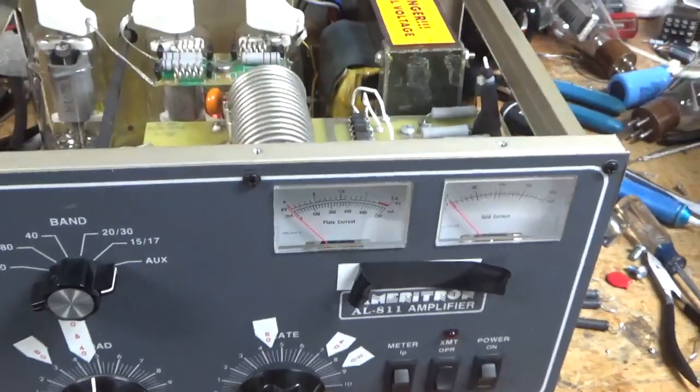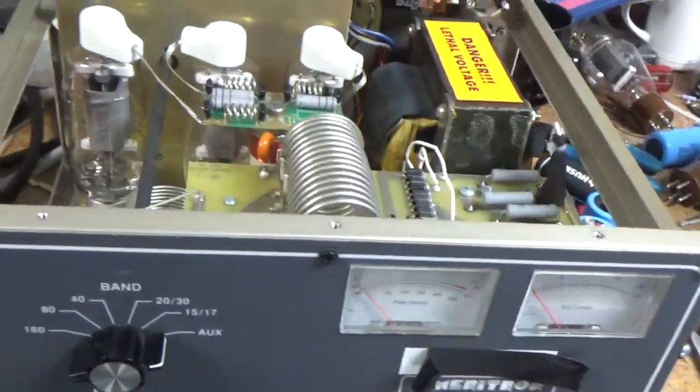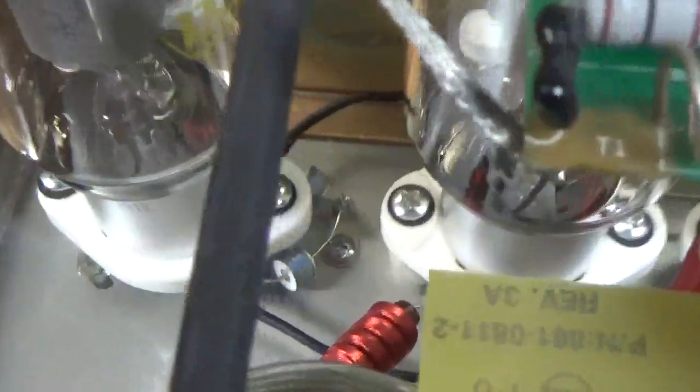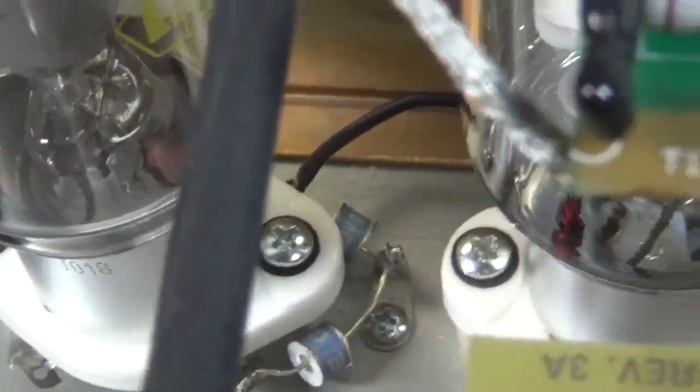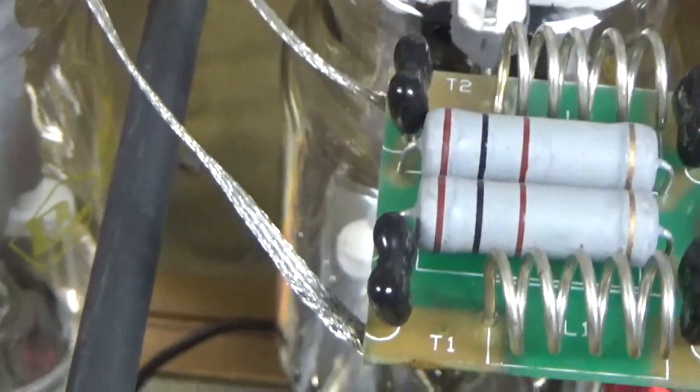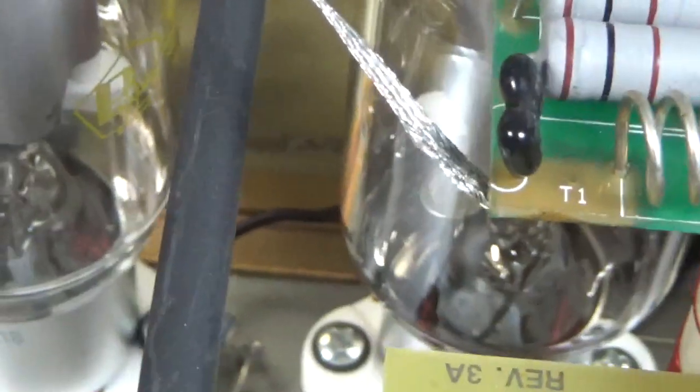With the completed Ameritron AL-811 amplifier, I'm going to show you everything I did real quick. So brand new gas discharge tubes at the base of the socket. Did not have any at all, this was an older one. One per side of the filament.